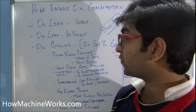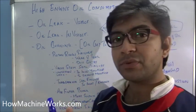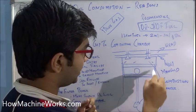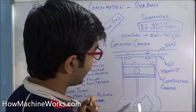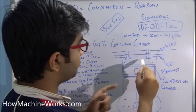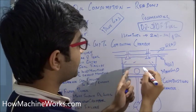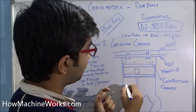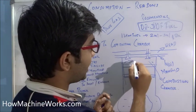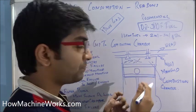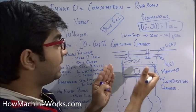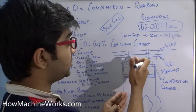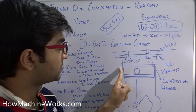The first cause is piston ring failure. You can see here — this is the piston ring, this is the piston, here is the engine oil in the crankcase, and this is the combustion chamber. When the piston rings fail, oil can get from the crankcase into the combustion chamber, where it burns off, resulting in higher engine oil consumption.